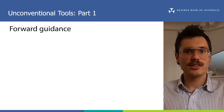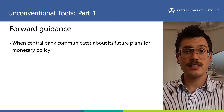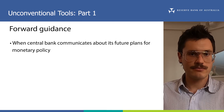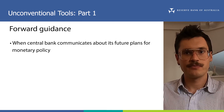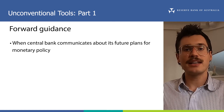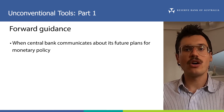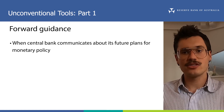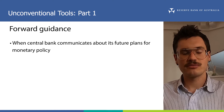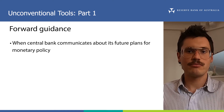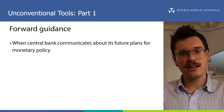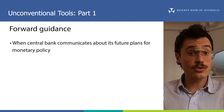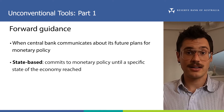First up is forward guidance. Forward guidance occurs when the central bank communicates about its future plans for monetary policy. For instance, the RBA might indicate that it will not raise the cash rate target until it's achieved its goals, such as lower unemployment and an increase in inflation. This is called state-based guidance.